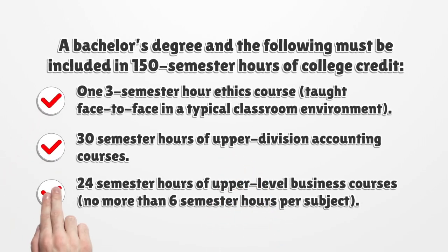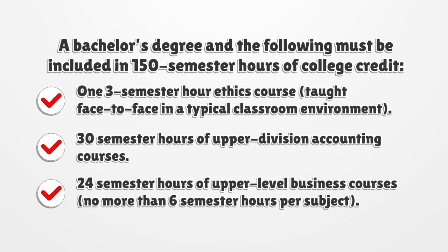A bachelor's degree and the following must be included in 150 semester hours of college credit: one three semester hour ethics course taught face to face in a typical classroom environment, 30 semester hours of upper division accounting courses, and 24 semester hours of upper level business courses with no more than six semester hours per subject.